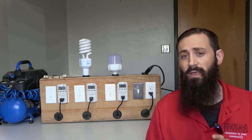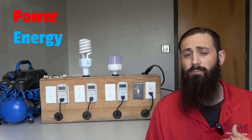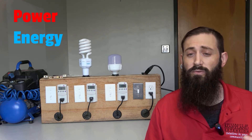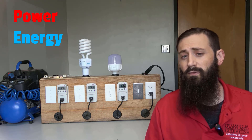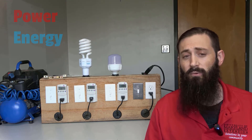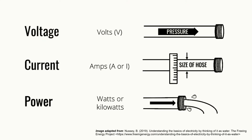Before we get started, it will be helpful to discuss the relationship between power and energy. The terms power and energy are often used interchangeably, but it's important to understand the key differences. Power is defined as the rate at which energy is used, produced, or transferred. When we multiply the voltage, which is the push of electricity, by the current, or the flow of electricity, then we get power.